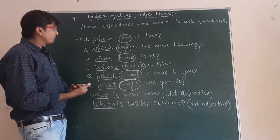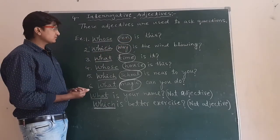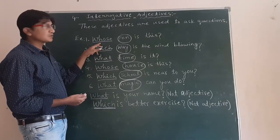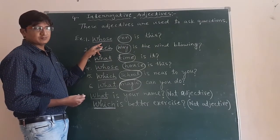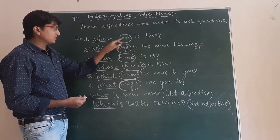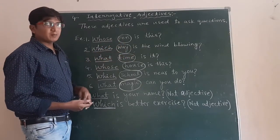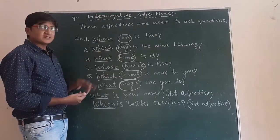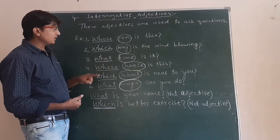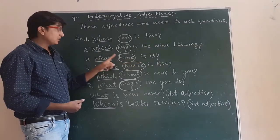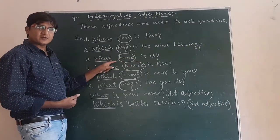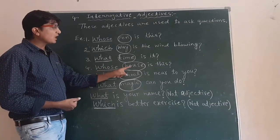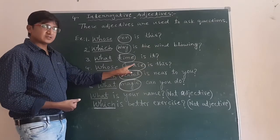Those are called interrogative adjectives. We can find these adjectives are used to ask questions. Look at the examples here. 'Whose pen is this?' — it's an interrogative sentence and 'whose' is an interrogative adjective; 'pen' is the noun. 'Which way is the wind blowing?' — 'way' is the noun, 'which' is the adjective. 'What time is it?' — 'time' is the noun, 'what' is the adjective.